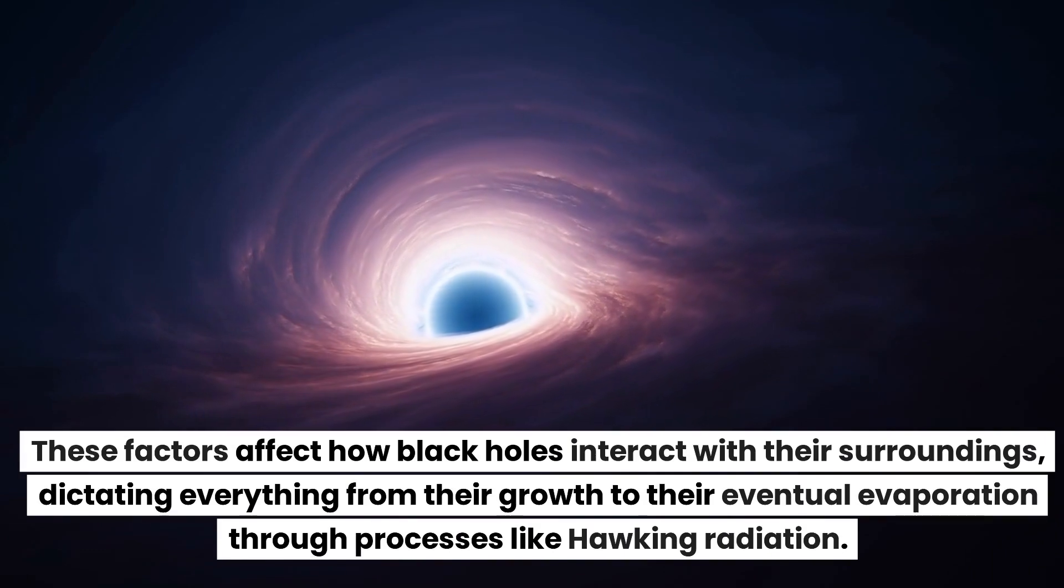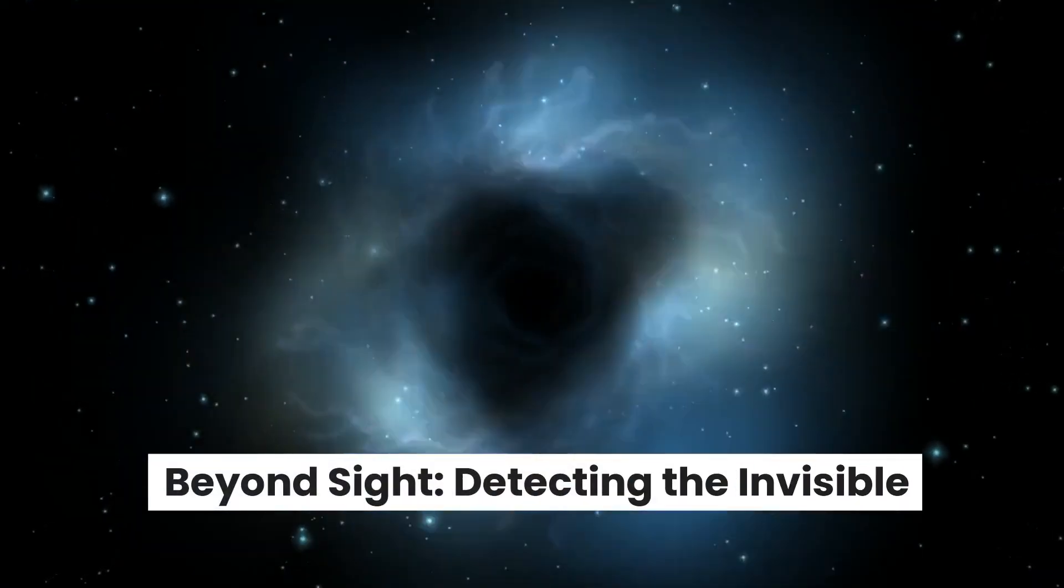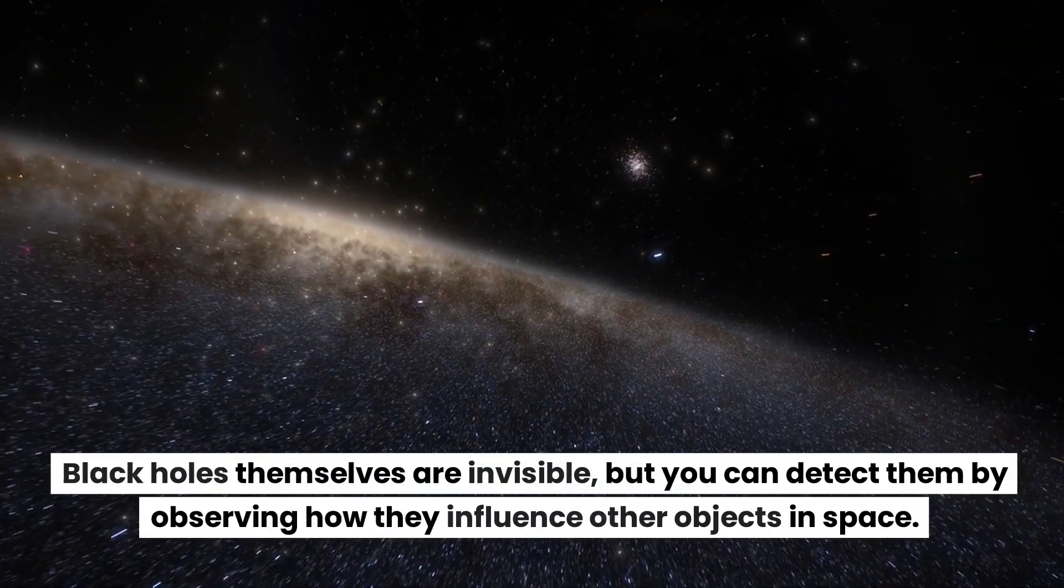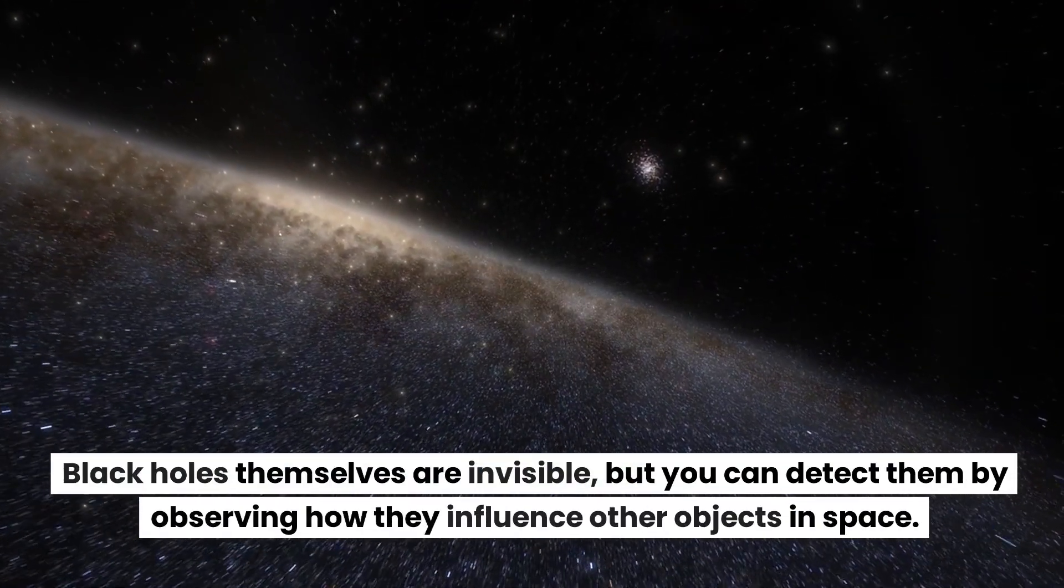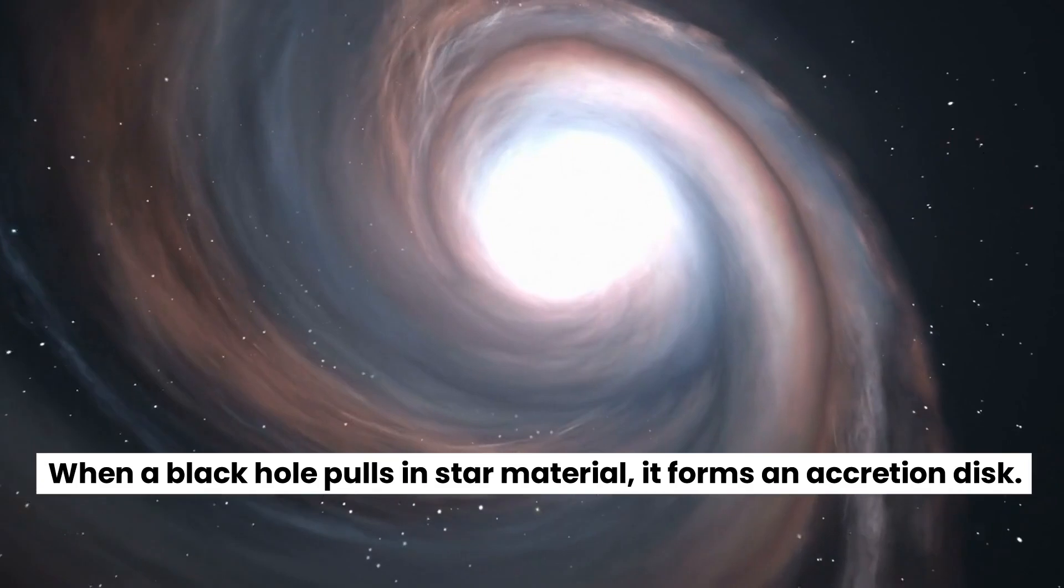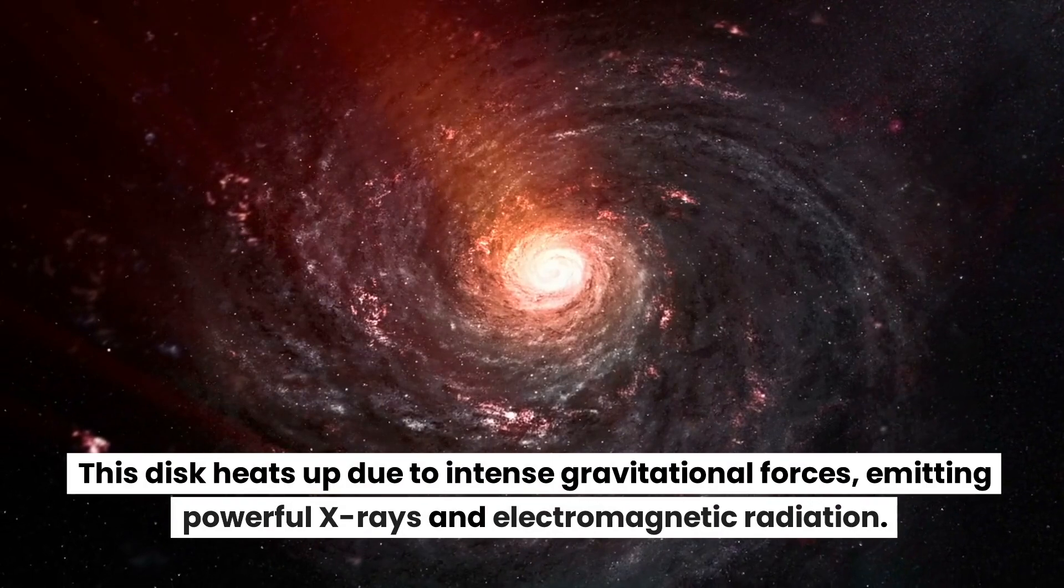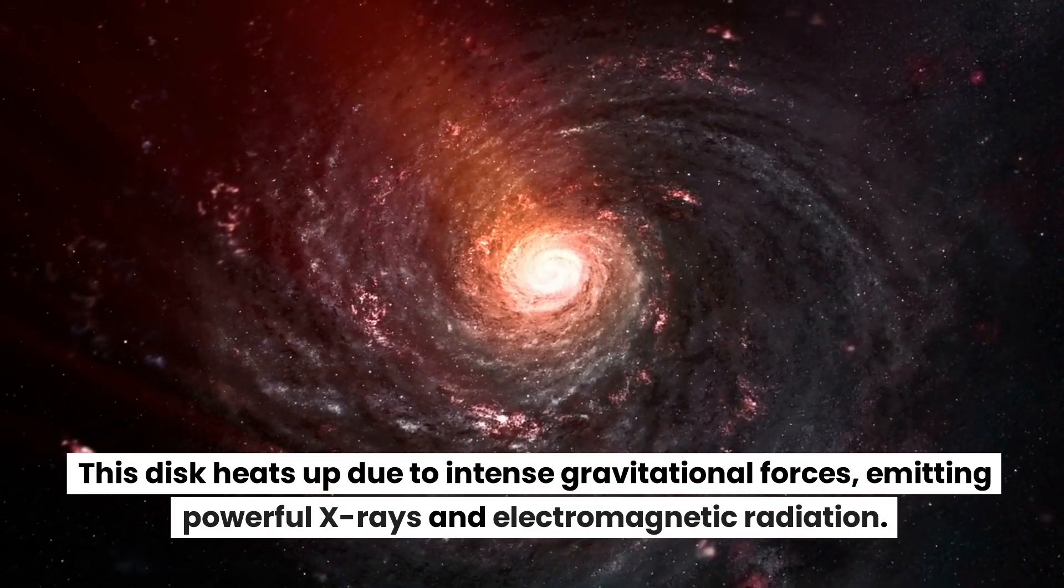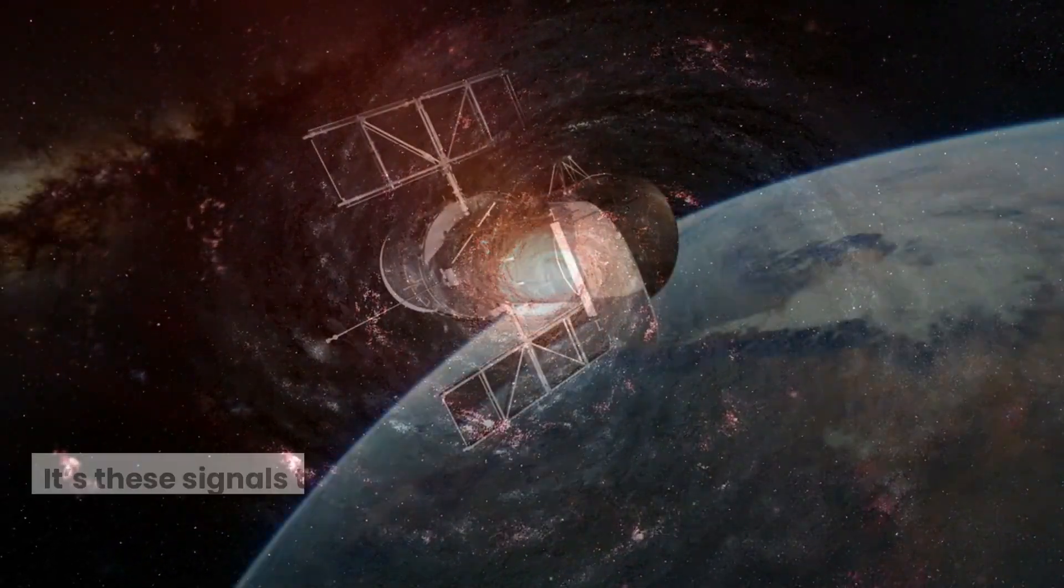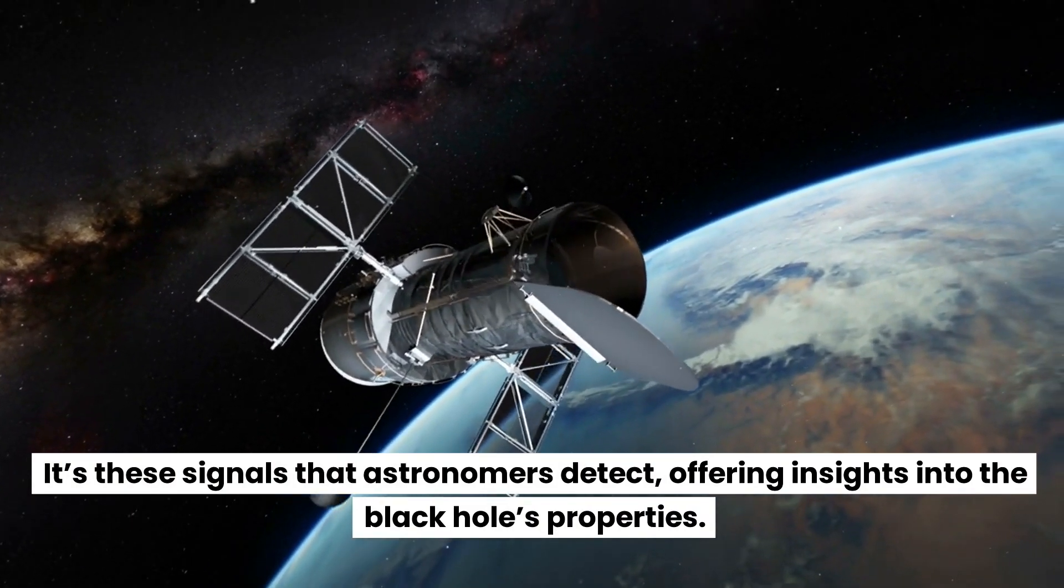Beyond sight: detecting the invisible. Black holes themselves are invisible, but you can detect them by observing how they influence other objects in space. When a black hole pulls in star material, it forms an accretion disk. This disk heats up due to intense gravitational forces, emitting powerful X-rays and electromagnetic radiation. It's these signals that astronomers detect, offering insights into the black hole's properties.